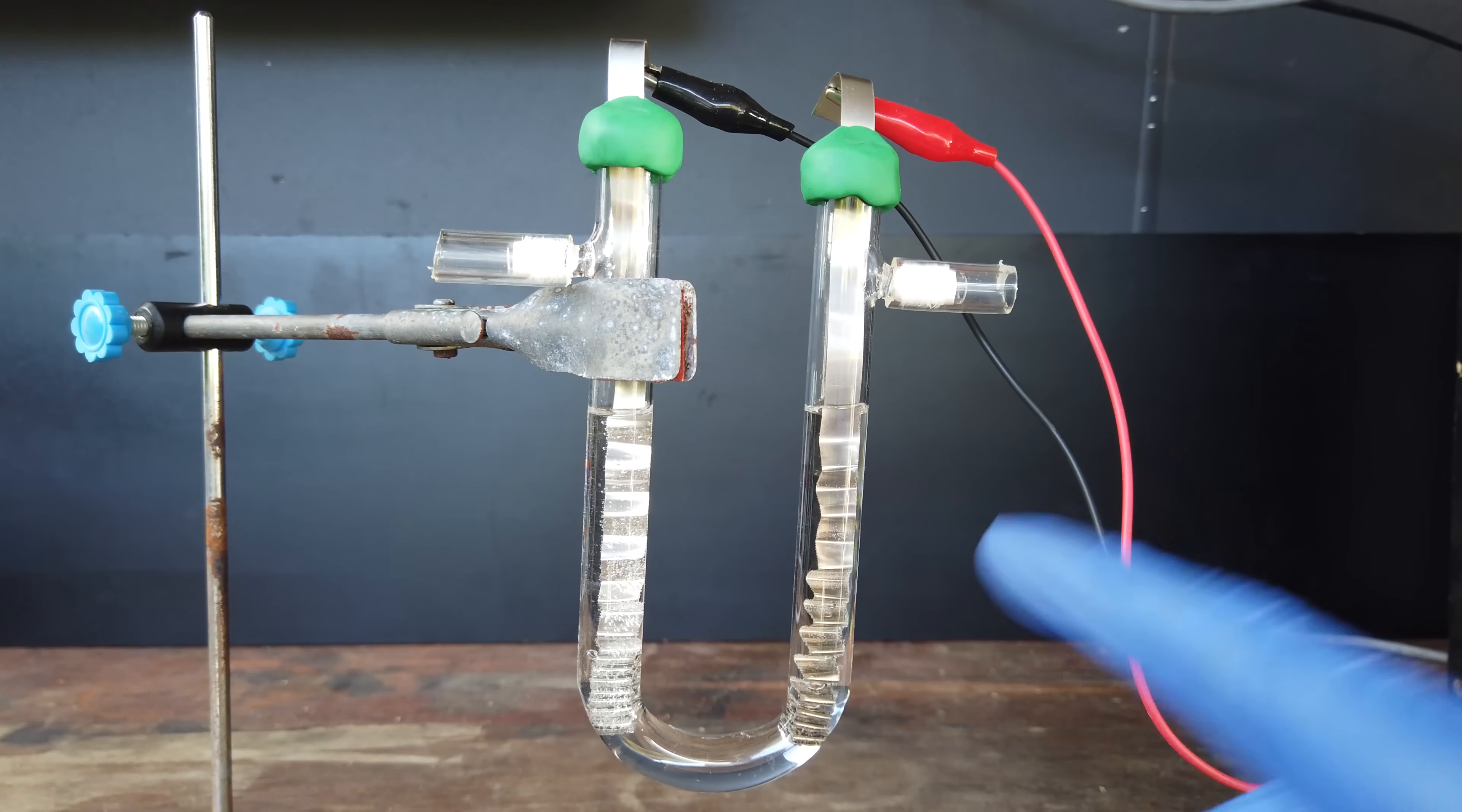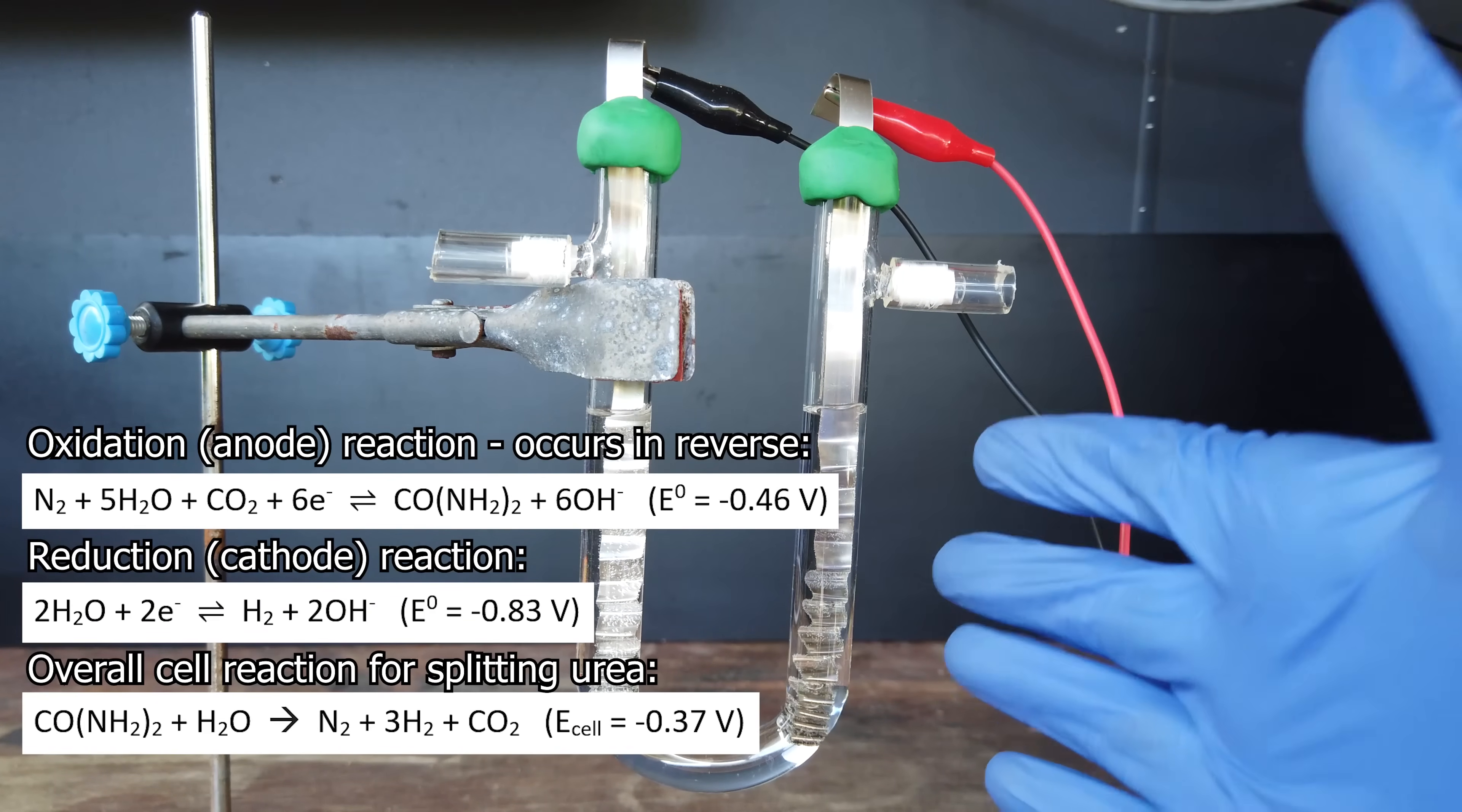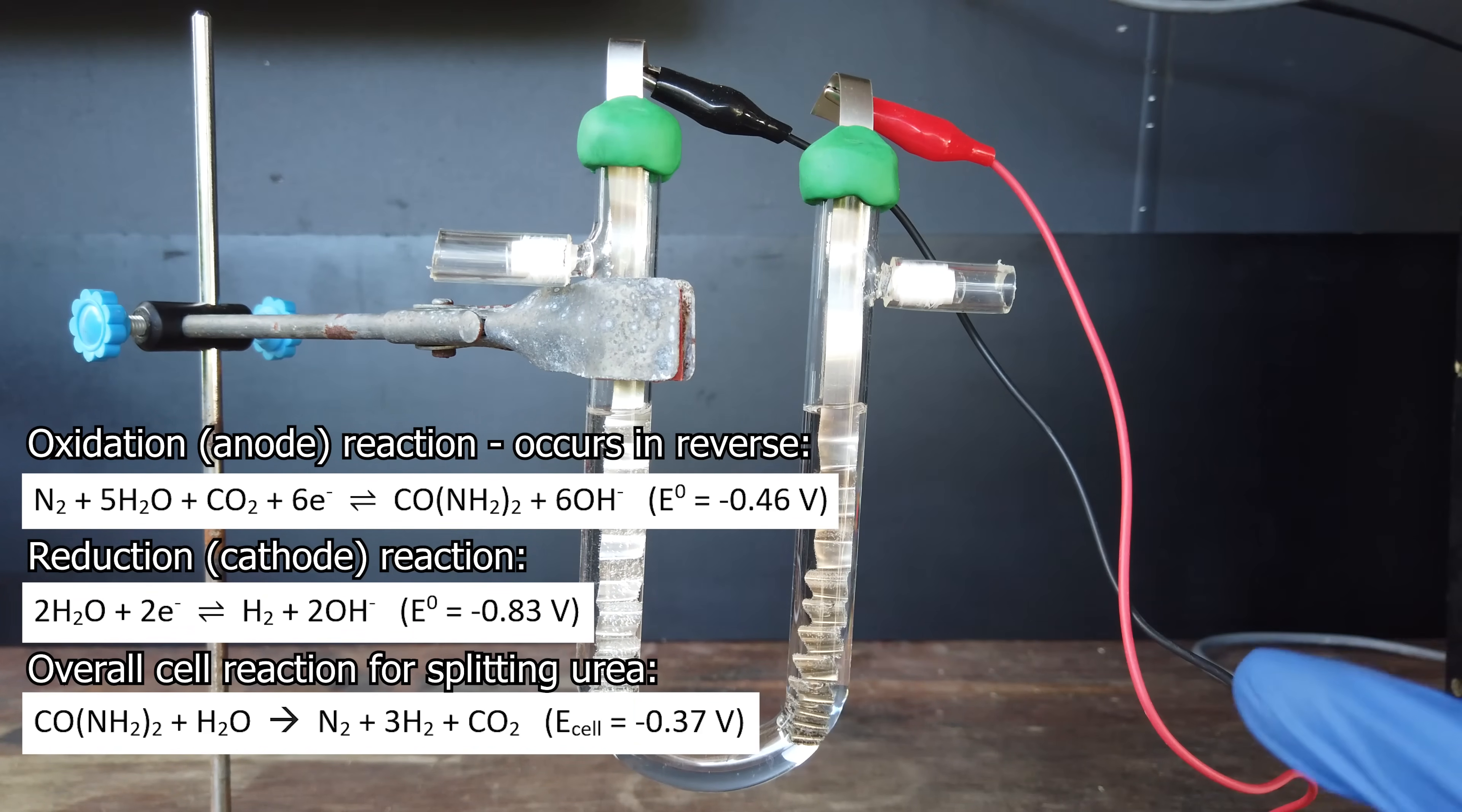However, there's a problem with increasing the voltage past 1.5 volts, and that is the fact that voltages much higher than 1.5 volts will start electrolyzing water itself to quite a significant degree. While electrochemical splitting of urea is actually incredibly easy in terms of energy requirements, thermodynamically, the minimum voltage required to split urea is around 370 millivolts. So 1.5 volts is definitely in excess there.